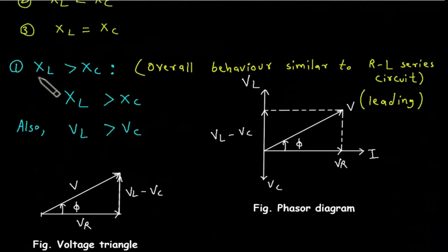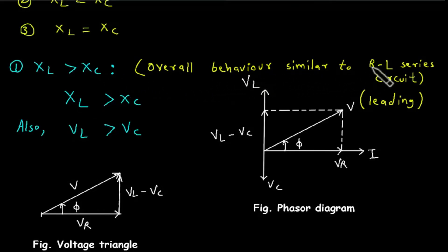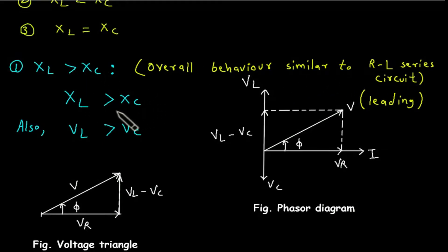When XL is greater than Xc, the overall behavior of the circuit is similar to an RL series circuit. When XL is greater than Xc, the voltage drop across the inductor is greater than the voltage drop across the capacitor.